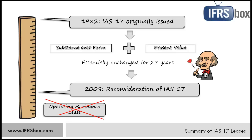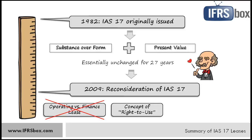The new IAS 17 will make no distinction between operating and finance lease, and that's a really huge change. Instead, the lessee will recognize an asset that is in fact his right to use the leased asset for the lease term, and also a liability to make lease payments. The right to use the asset will be measured at present value of the lease payments and not at fair value, which is also different from the current standard.